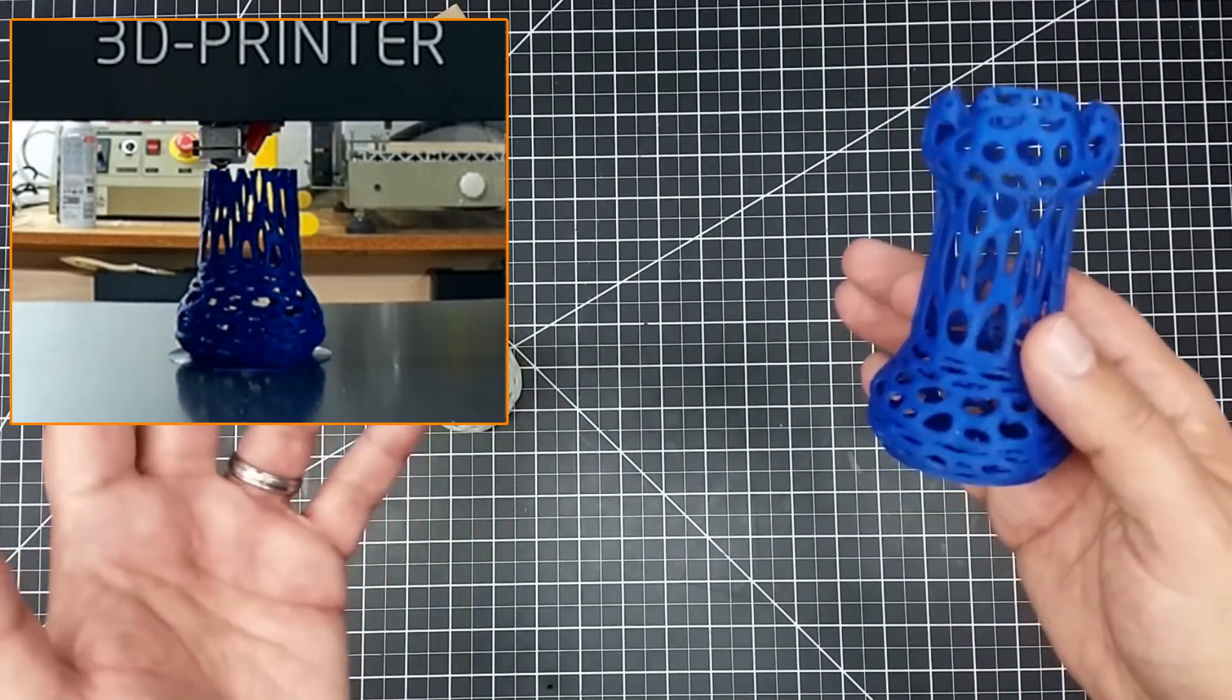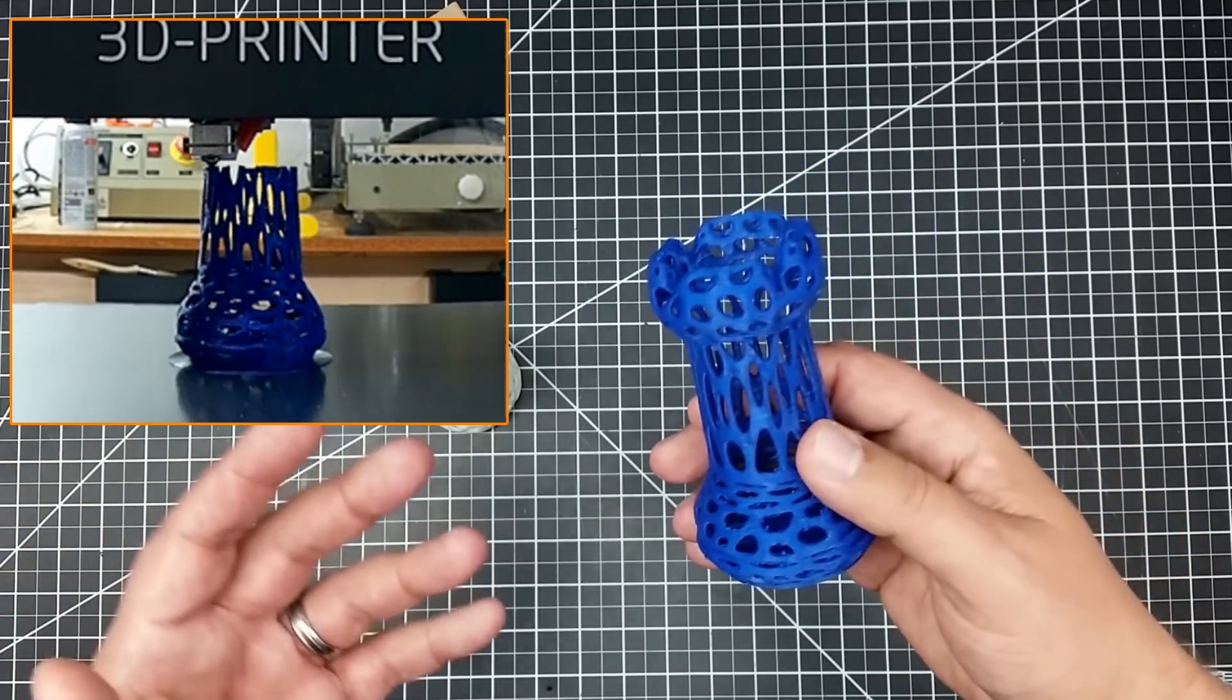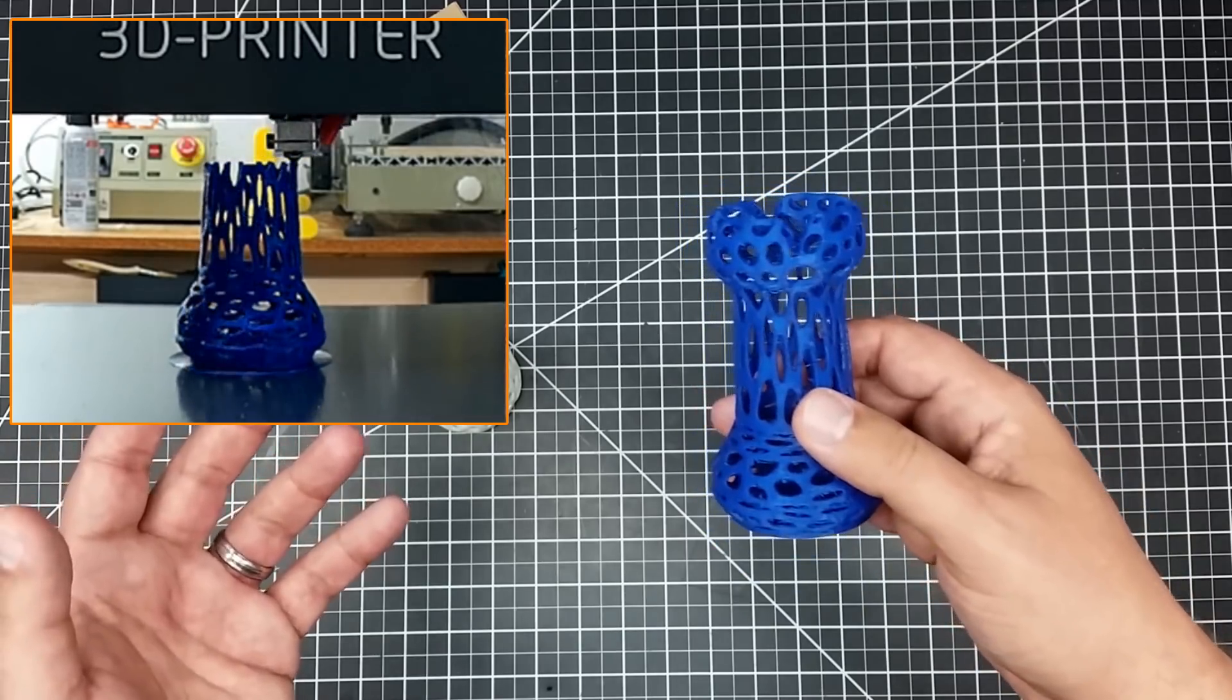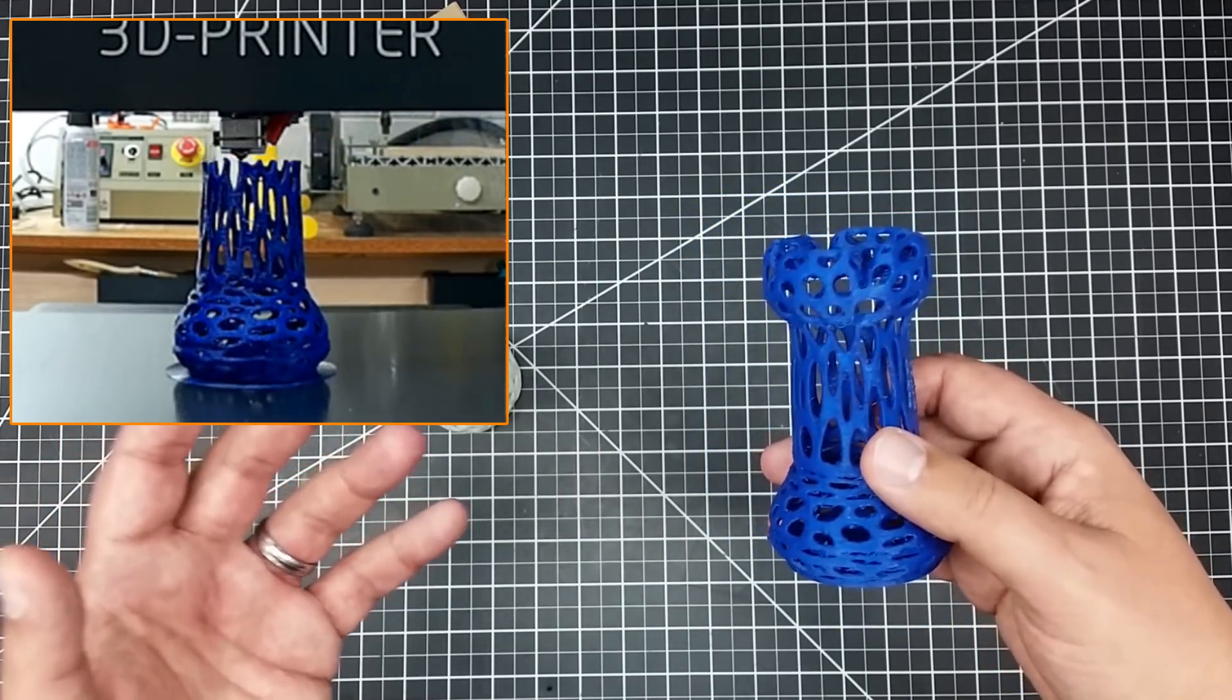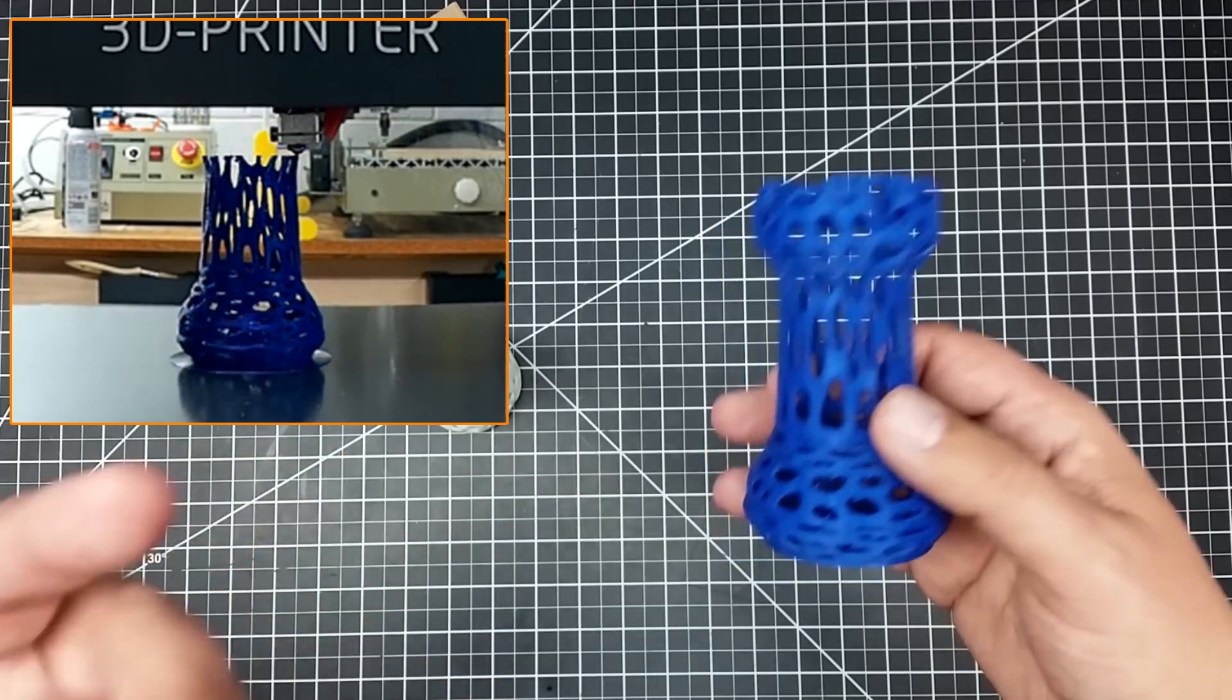But I just, number one, I wanted to see how the printer would perform just sort of out of the box. Because this is one of the things with the JG Aurora. I'm really treating this pretty much as out of the box. You know, how is it going to perform for Joe Average? How is the mechanics of it going to hold up in that?